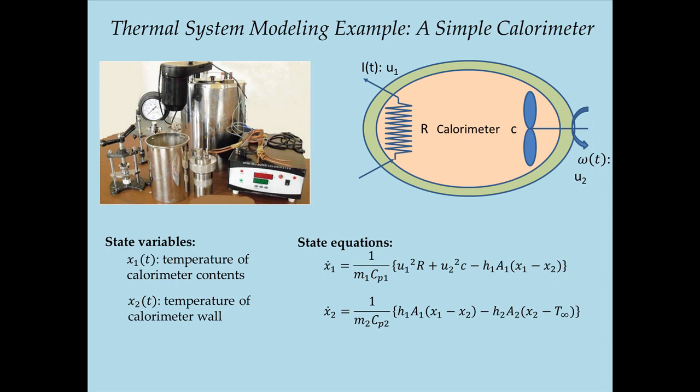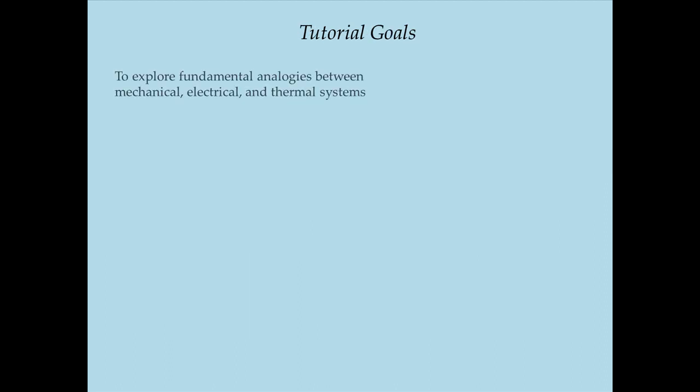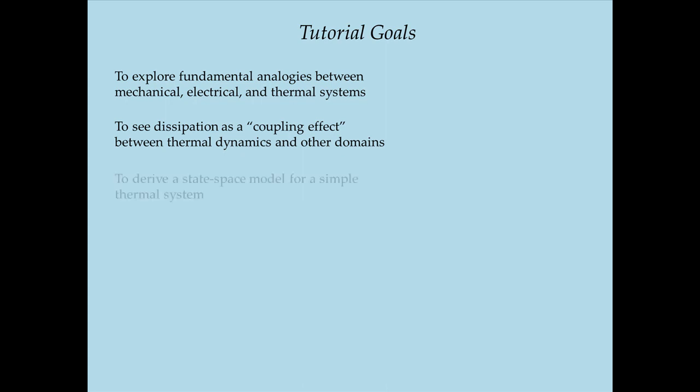With this in mind, we've covered the three tutorial goals: we've explored fundamental analogies between mechanical, electrical, and thermal systems; we've seen how dissipation acts as a coupling effect between thermal systems and other domains; and we've derived a state-space model for a simple thermal system — a calorimeter. Thank you very much, and I look forward to the next tutorial with you.